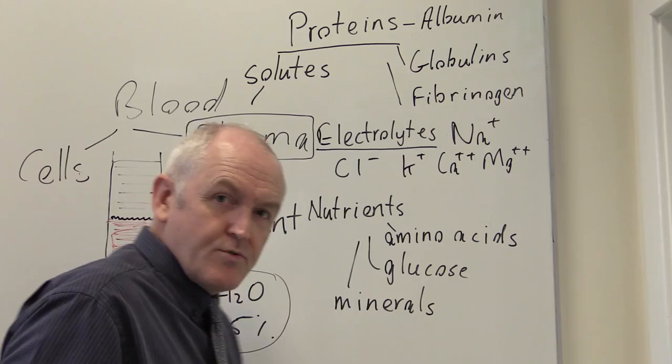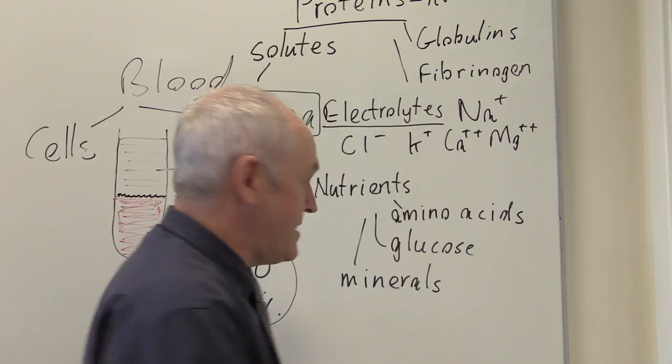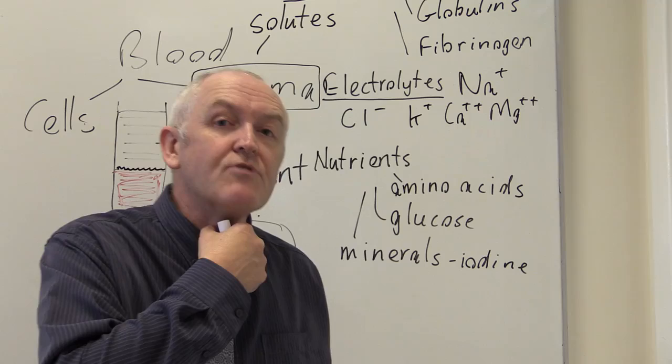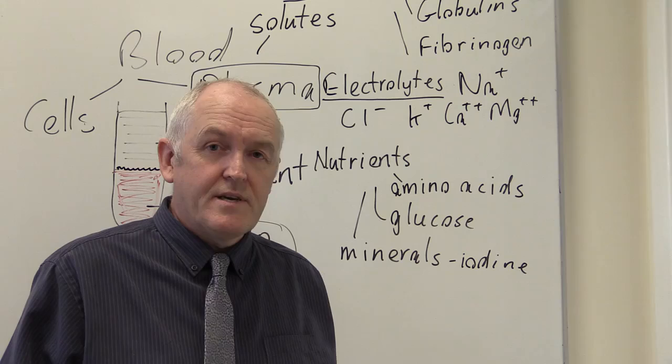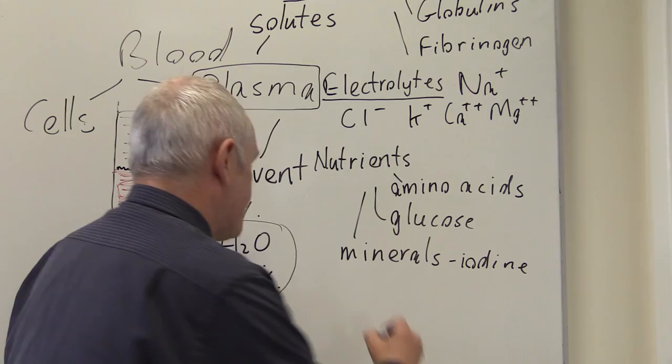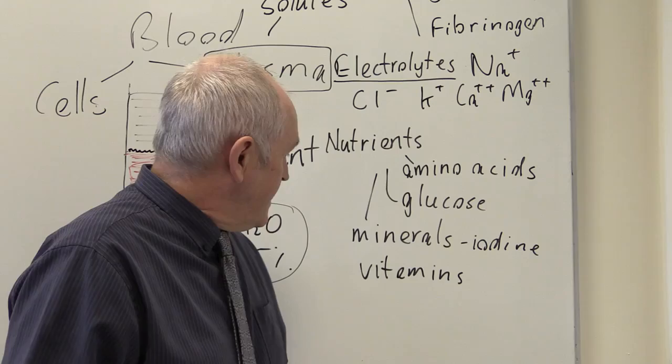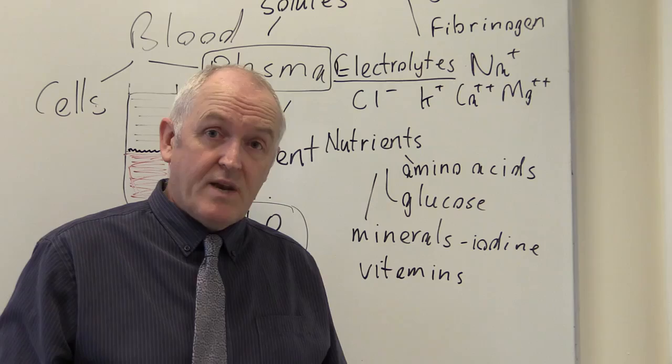Other nutrients are going to be minerals — inorganic simple compounds. You might think of iodine, for example — the thyroid gland needs iodine in order to make thyroid hormone. Other soluble nutrients in the blood are vitamins. The vitamins A, D, E, and K are the fat-soluble vitamins, and in the plasma we're going to find water-soluble vitamins: vitamins B1 to B11 and vitamin C.